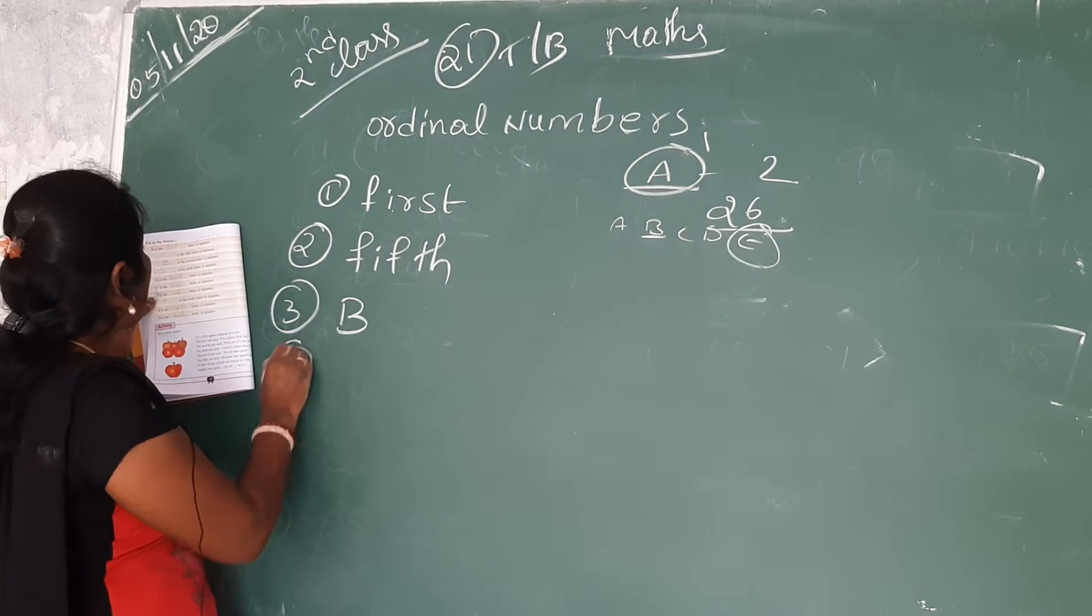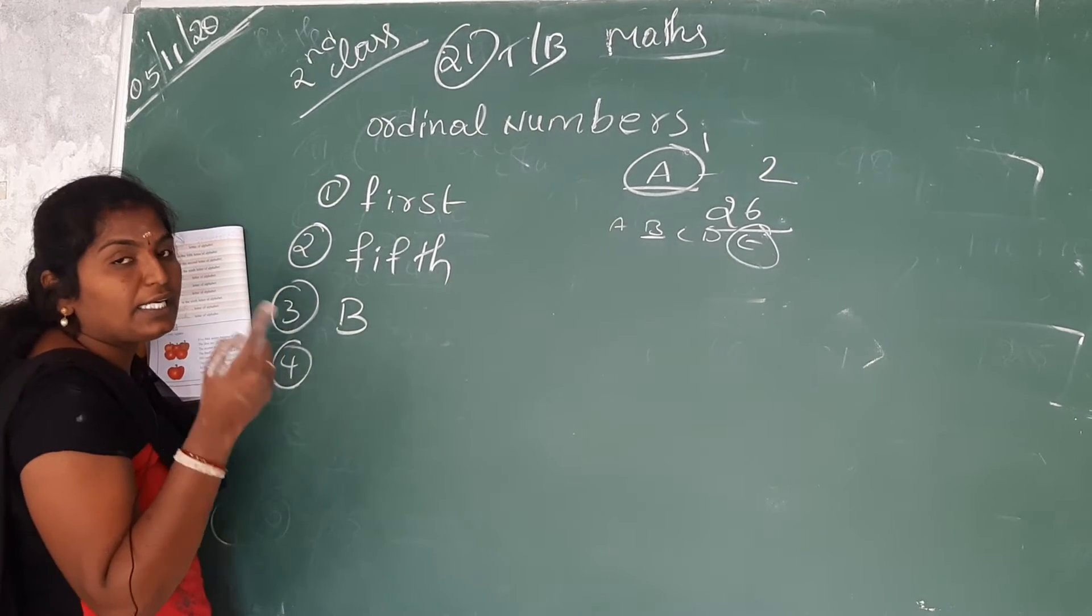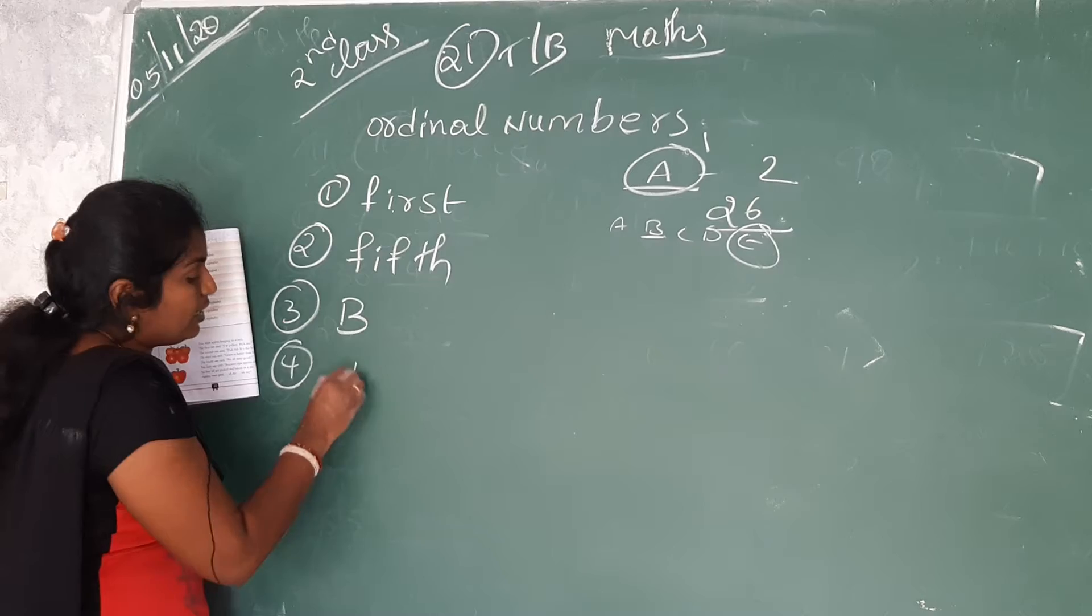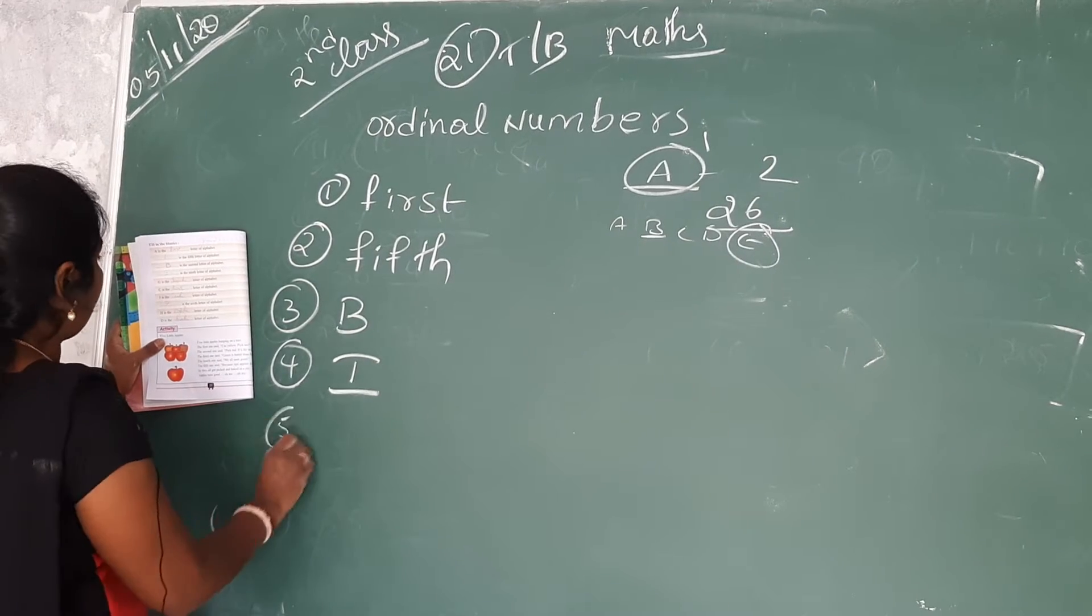Next fourth one. Dash is the ninth letter. A B C D E F G H I. I is the ninth letter.